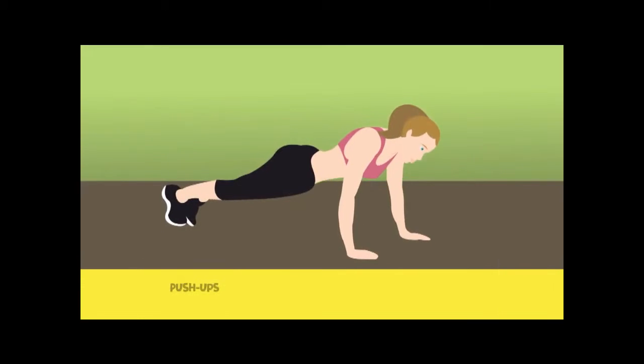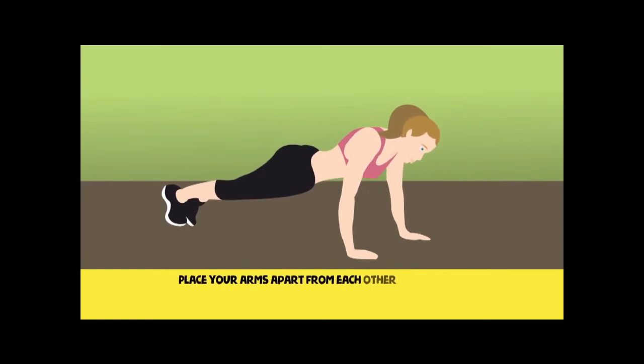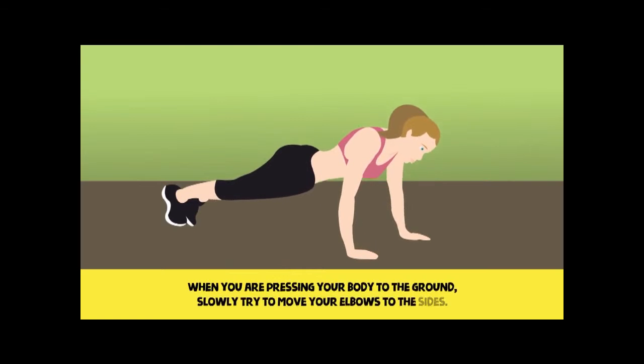Exercise 3. Push-ups can help you strengthen the pectoral muscles. If you are a beginner, begin with either doing them on your knees or while resting against a sofa or chair. Place your arms apart from each other on the sides, keeping them as far from each other as possible. Then pull your legs together. When you are pressing your body to the ground, slowly try to move your elbows to the side. Perform at least three sets of 12 to 15 push-ups.